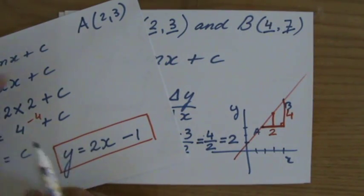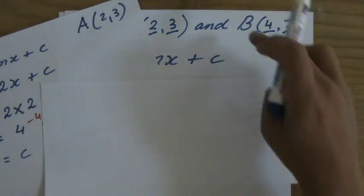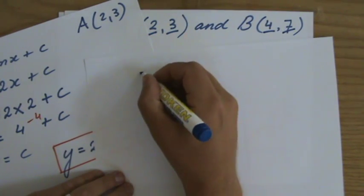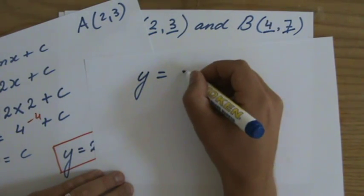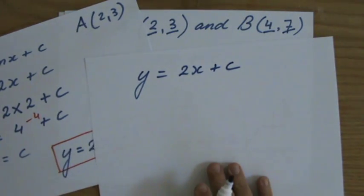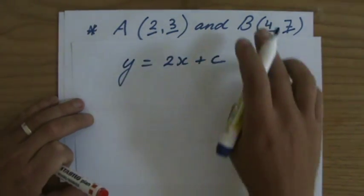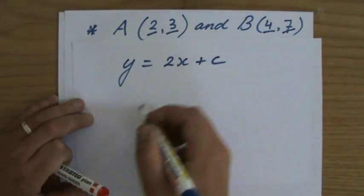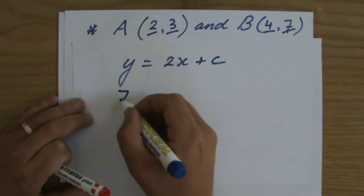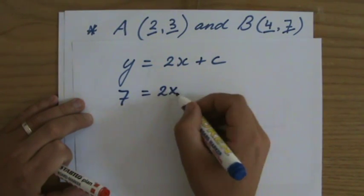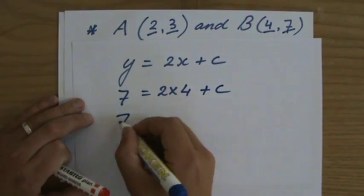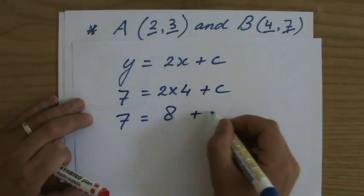Now, if you are not sure if this is correct, let's take point B and see if that gives me the same y-intercept. So we had y equals 2x plus c. Now, instead of substituting point A, we're going to substitute point B in the equation to find c. So what is y? Y is seven equals two times x. And for B, that is four plus c. Seven equals eight plus c.